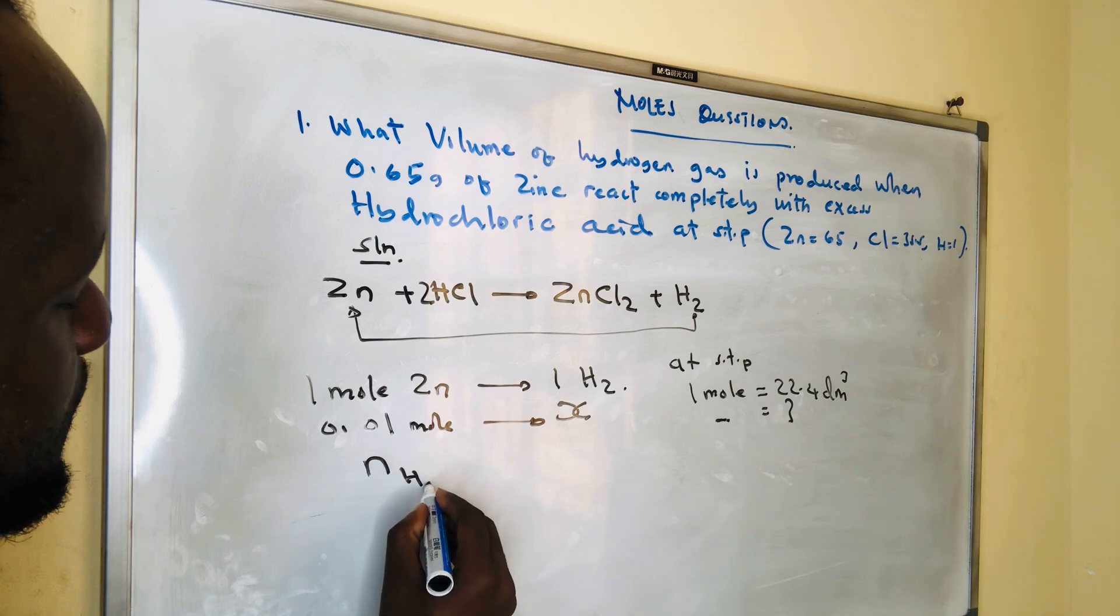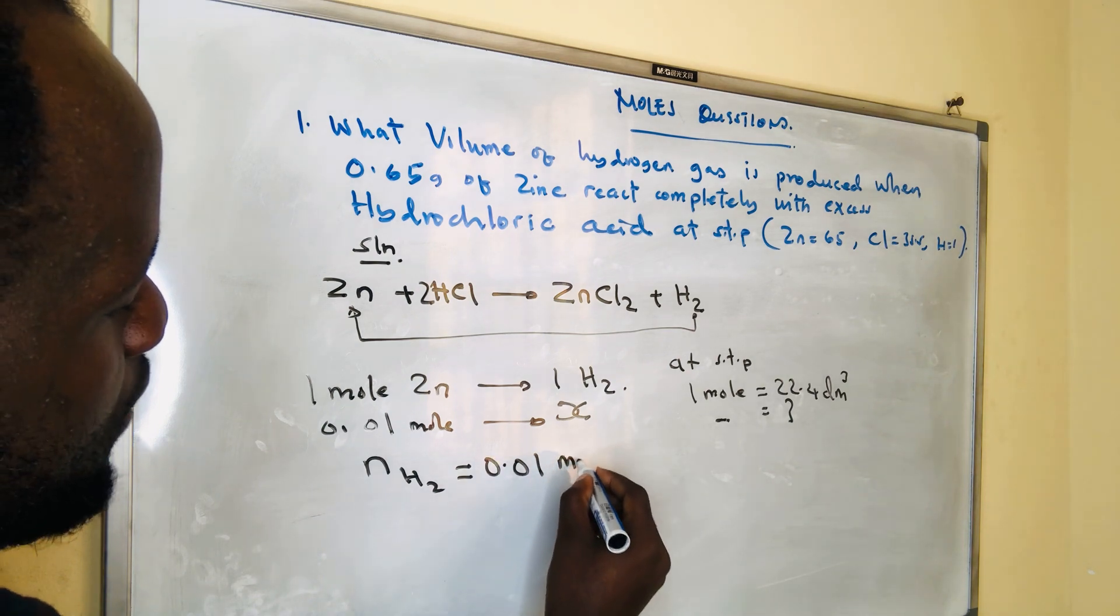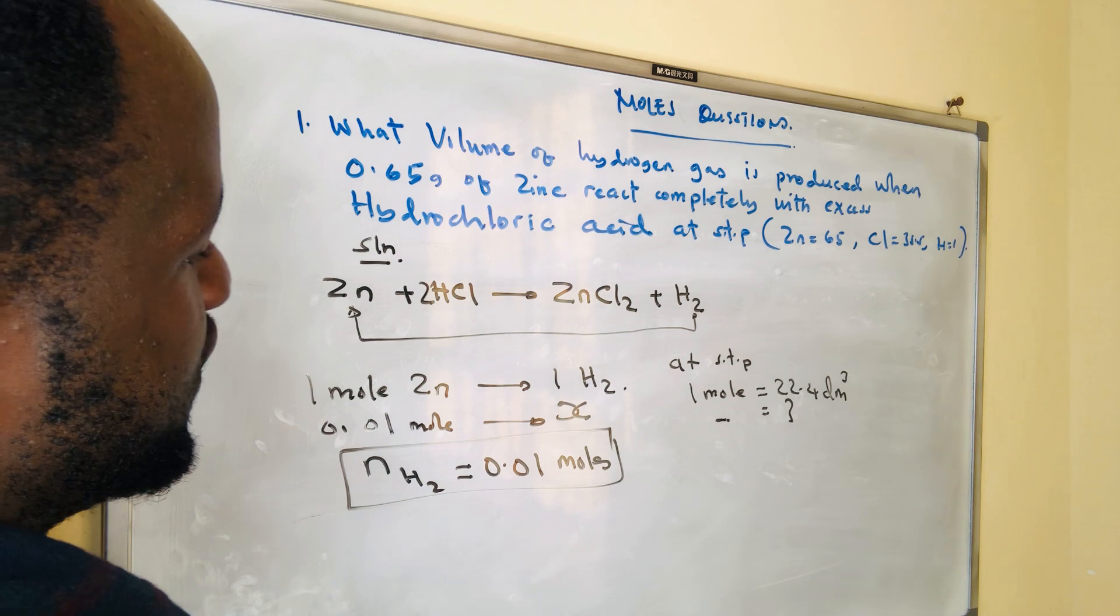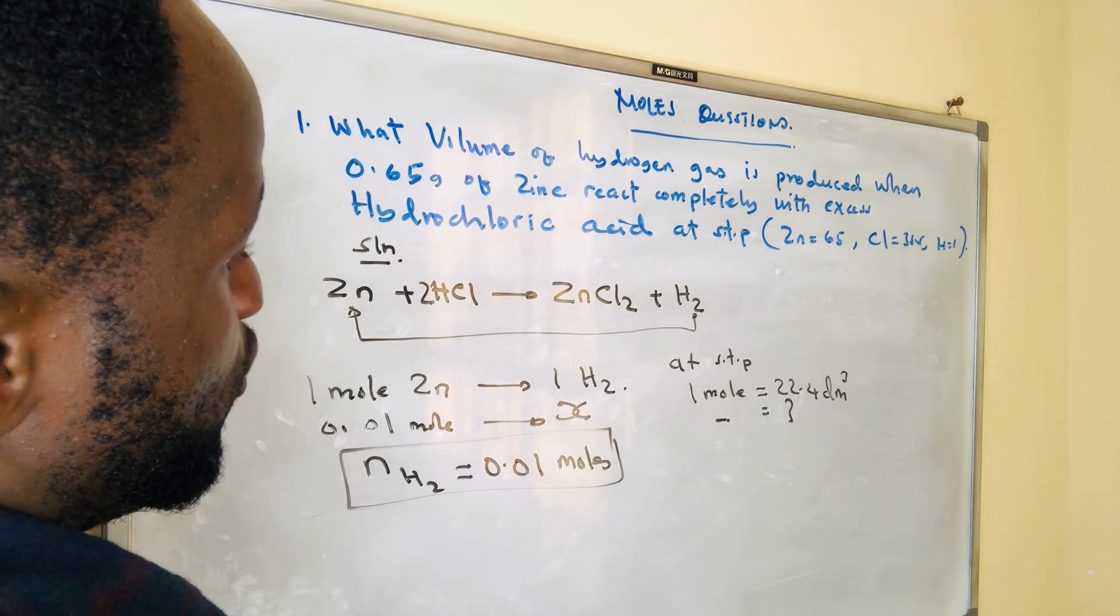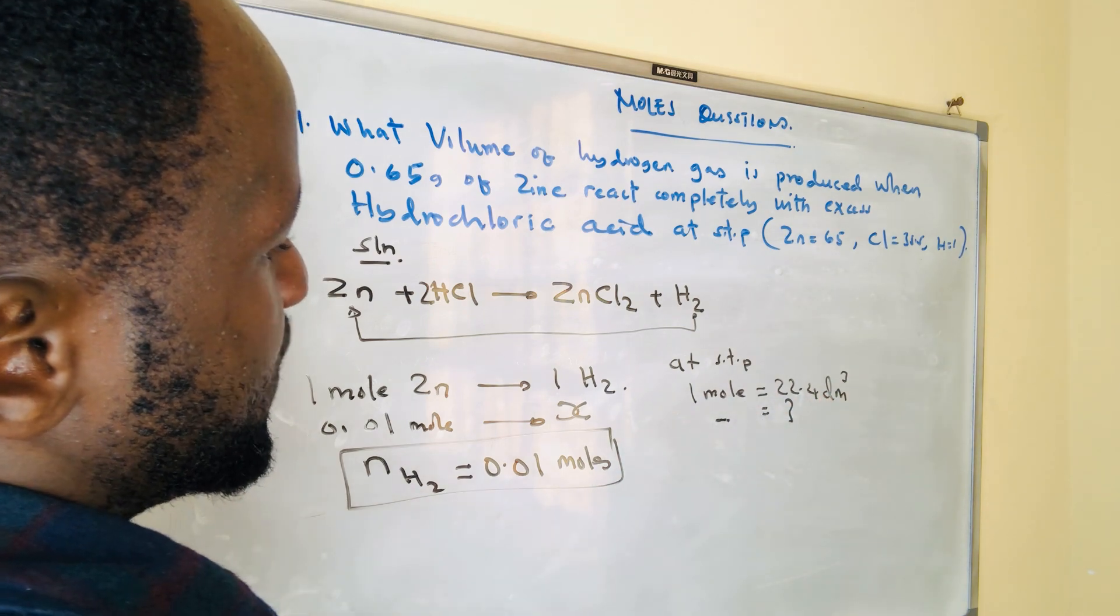So at the end, you will get the number of moles of hydrogen gas equal to 0.01 moles. Now that we have the moles, we can find the volume. At STP, 1 mole occupies 22.4 DM³.